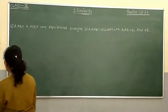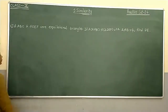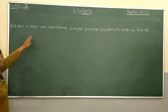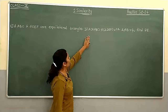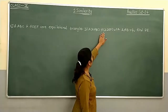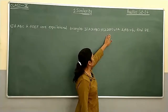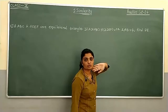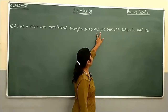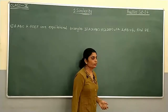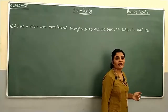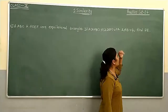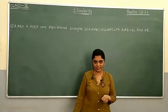This is the second last sum of this practice set. Triangle ABC and triangle DEF are equilateral triangles. The area of triangle ABC to area of triangle DEF is equal to 1 is to 2. AB is equal to 4. Find DE.